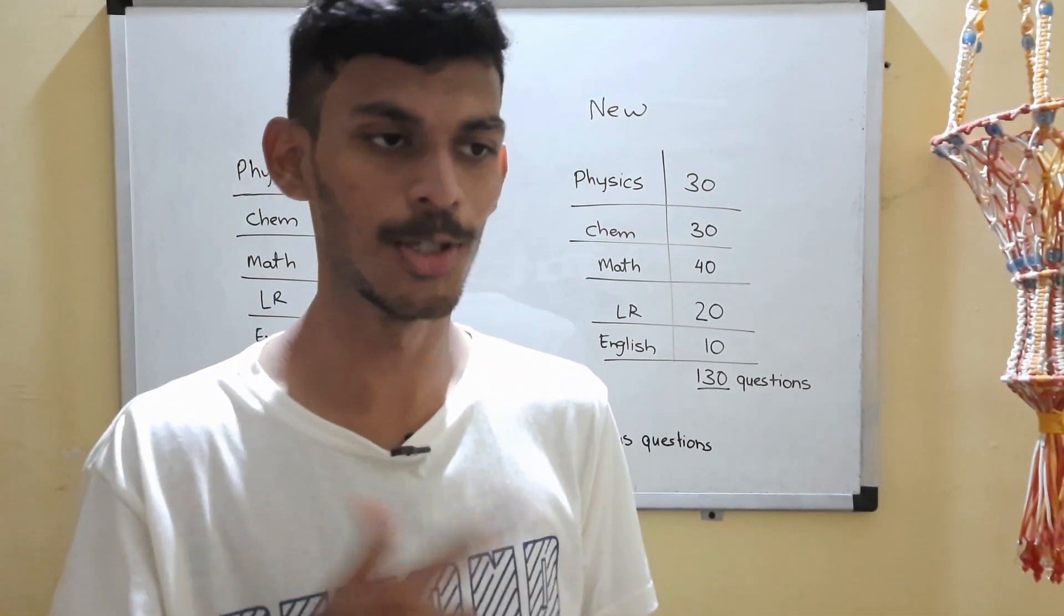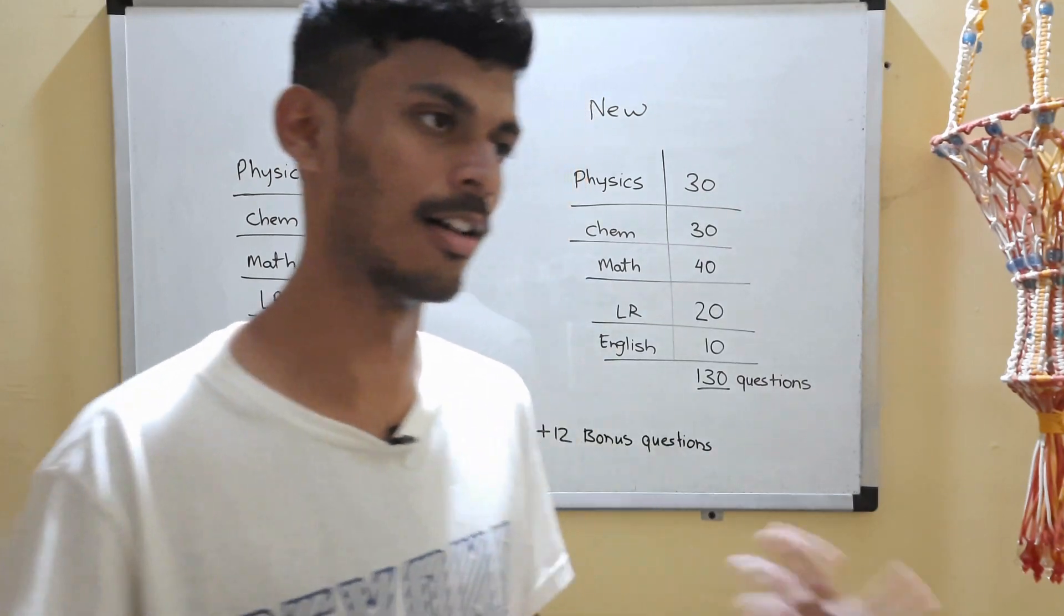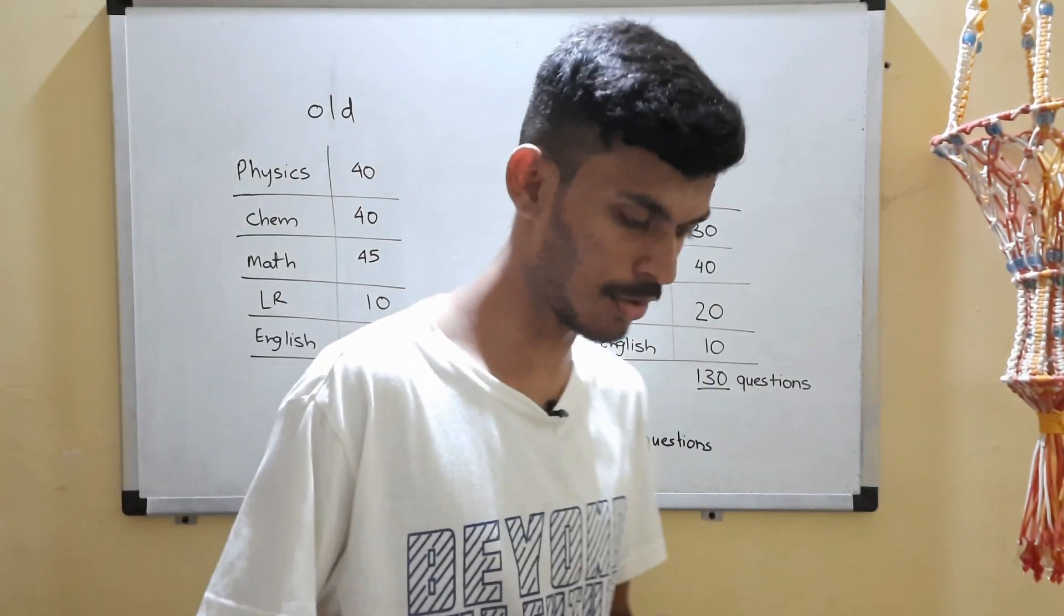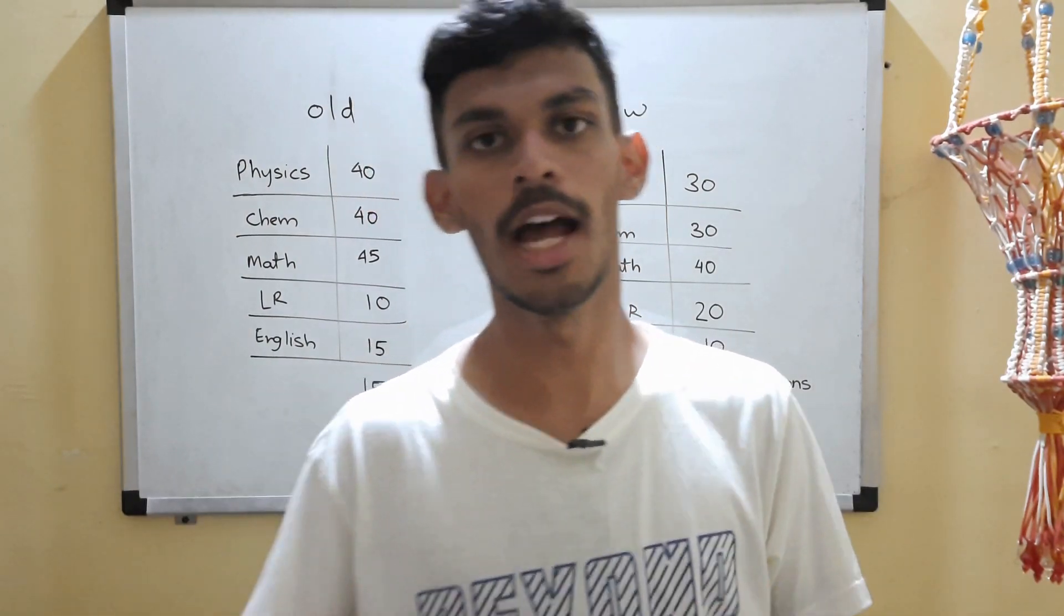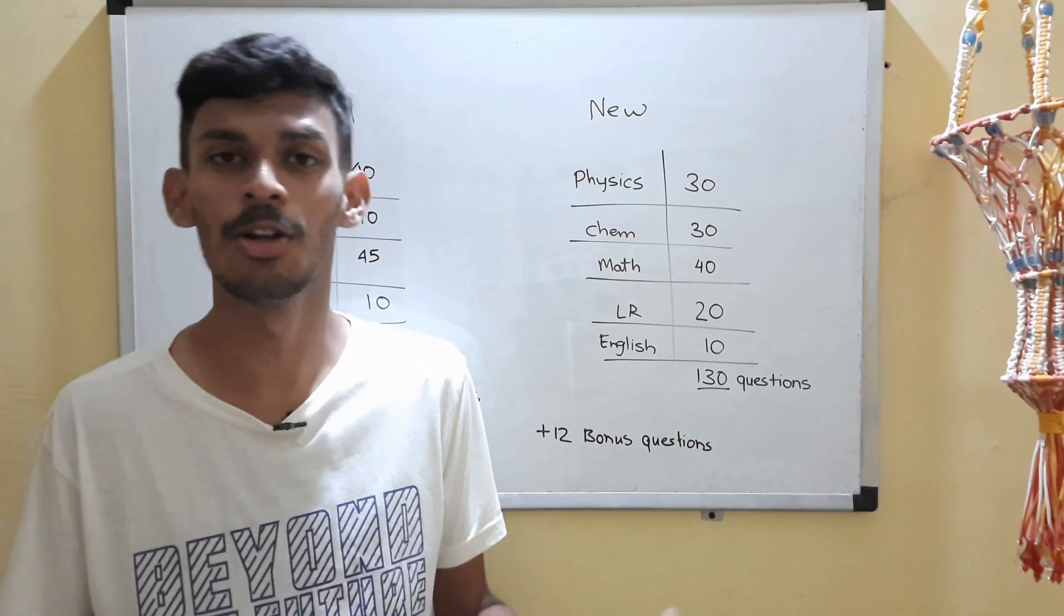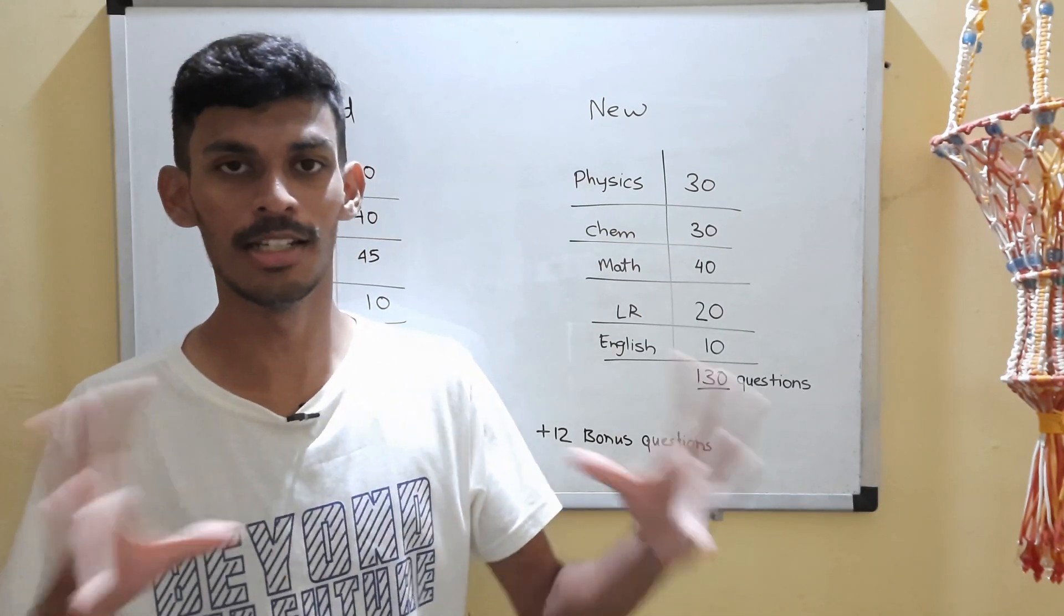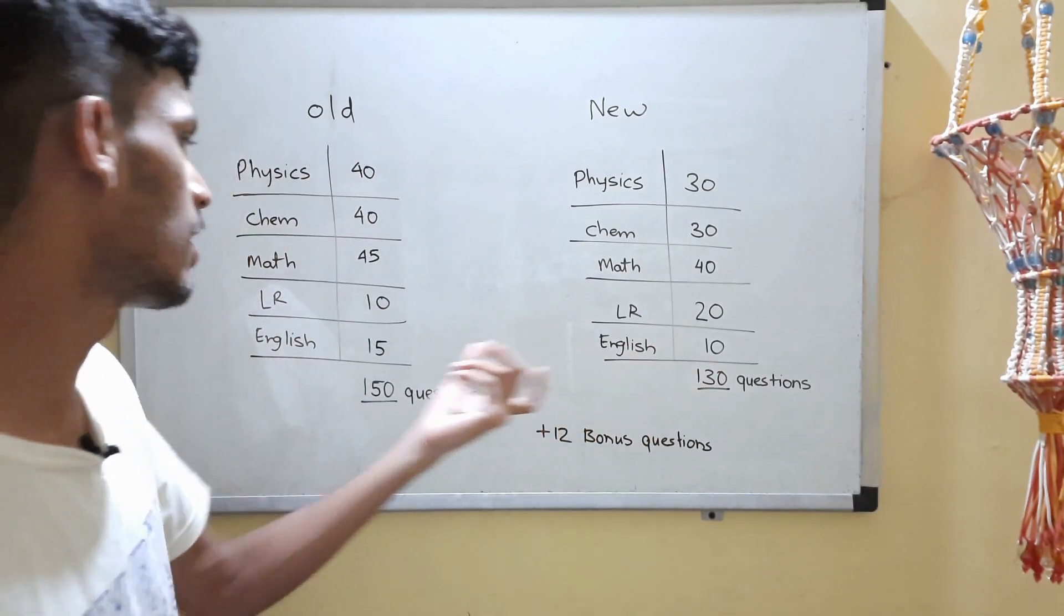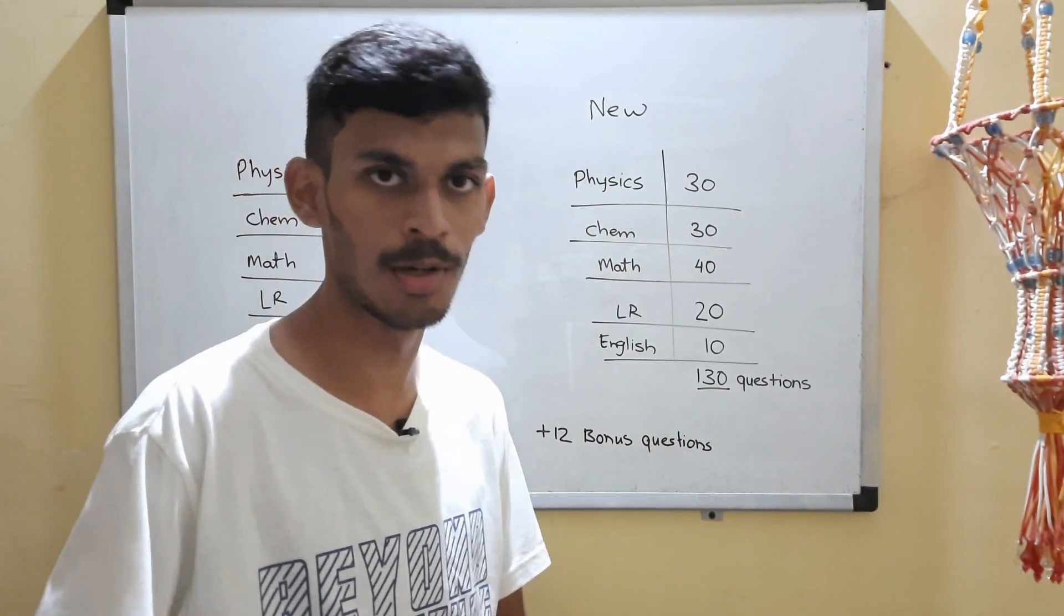Those are the favorite topics which are asked often, but otherwise if you exclude that, the other topics are uncertain. They can ask questions from any topic in English. Grammar is itself very vast, so reducing the number of questions in English will help you a lot because it reduces the uncertainty.